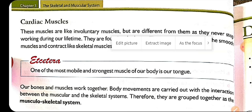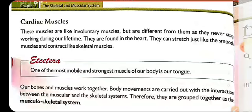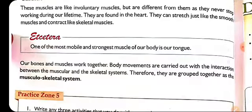Cardiac muscles can stretch just like smooth muscles and contract like skeletal muscles. One of the most strongest muscles in our body is our tongue — and it is also the most mobile muscle, meaning the muscle with the most movement.